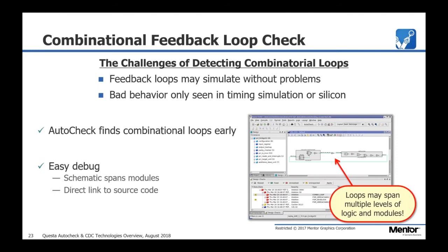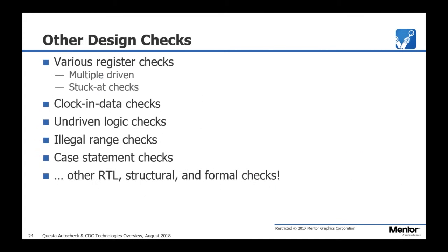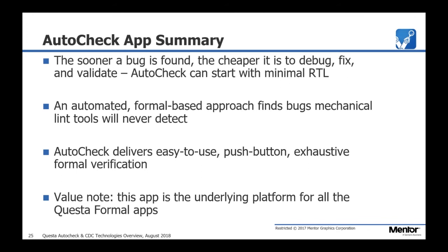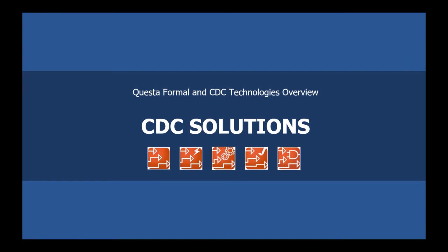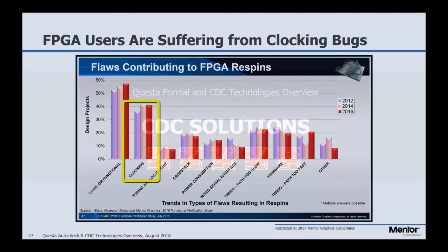These checks can trace through many levels of code, not just within one module. Other checks include multiply-driven signals, stuck-at issues, using clock as data, undriven logic, and illegal bus ranges. All these checks are built into Auto Check. If you're already compiling your code for ModelSim or Questa, you've done the first step — just click go. We find it's good to do before you even drop your design into a testbench, to get as many bugs out as possible before you start running simulation.